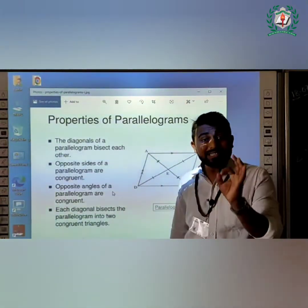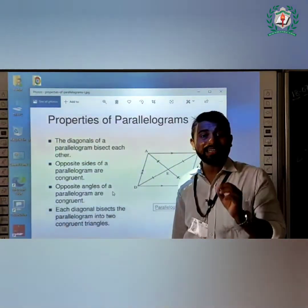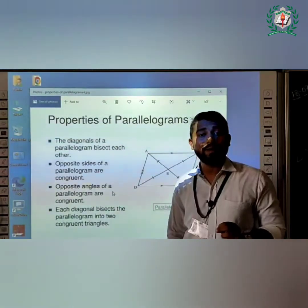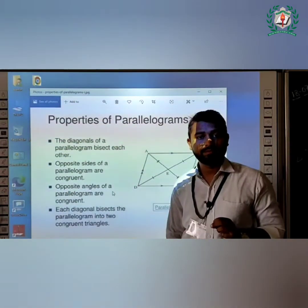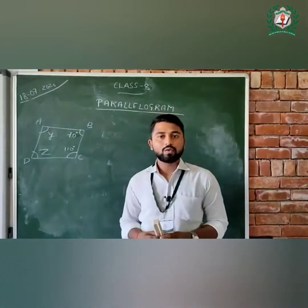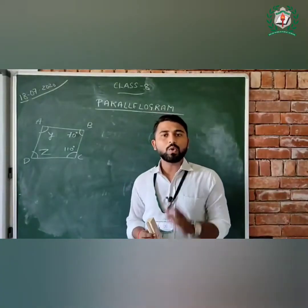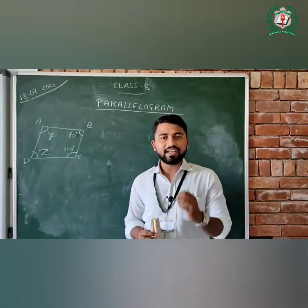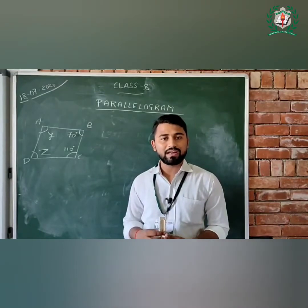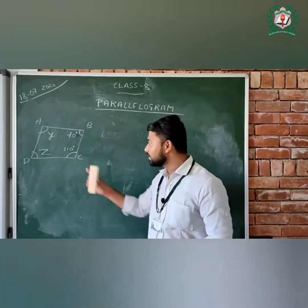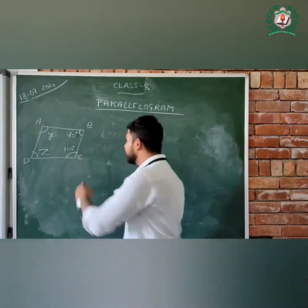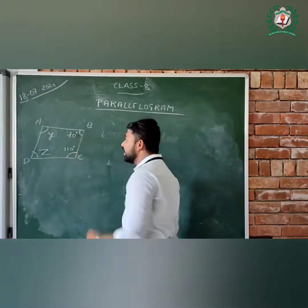Now let's take a practical example of a parallelogram. Here is a diagram where angle B is 70 degrees, and we have to find the values of angles A, C, and D — that is, find the values of X, Y, and Z.